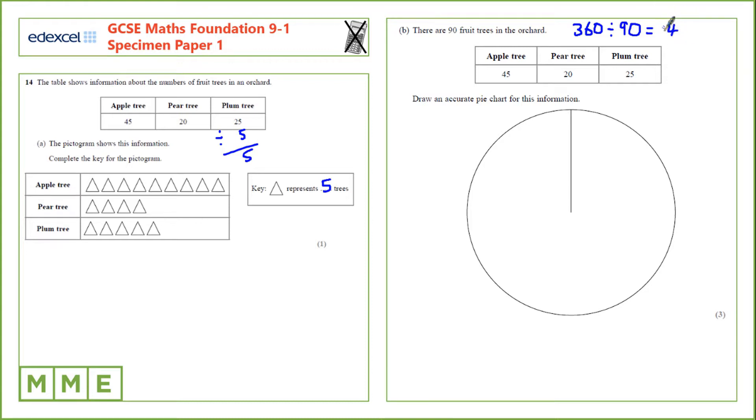we get that four degrees is equivalent to one tree. For example, we can take 45 trees and multiply by four to get 180 degrees for apple trees.